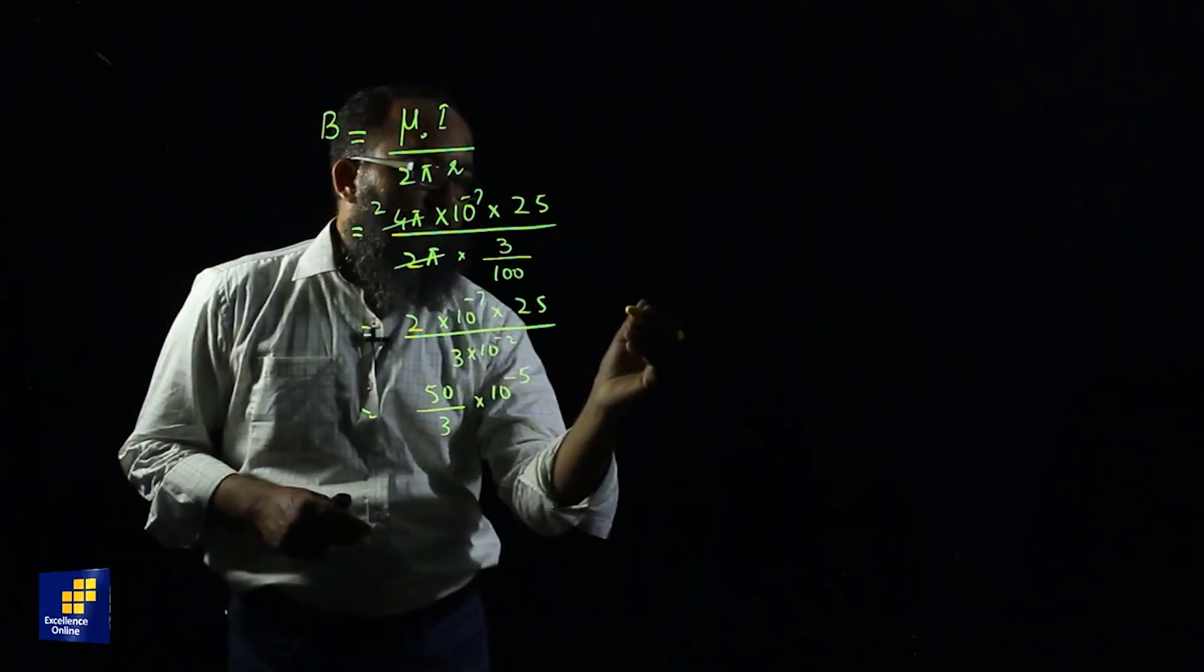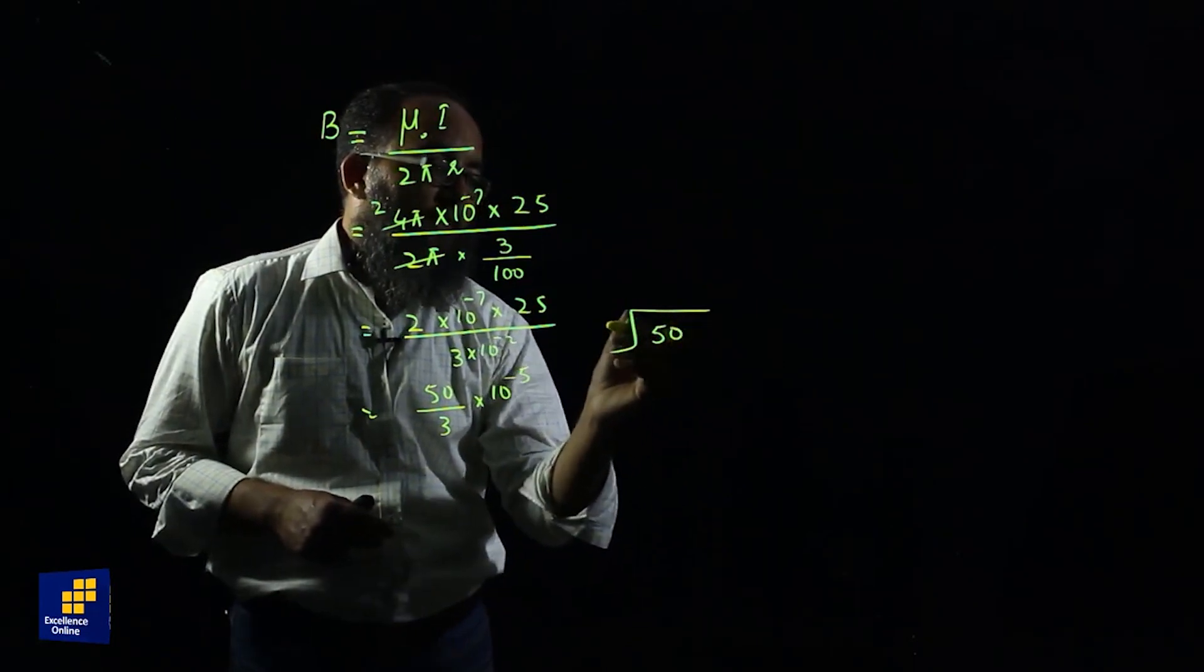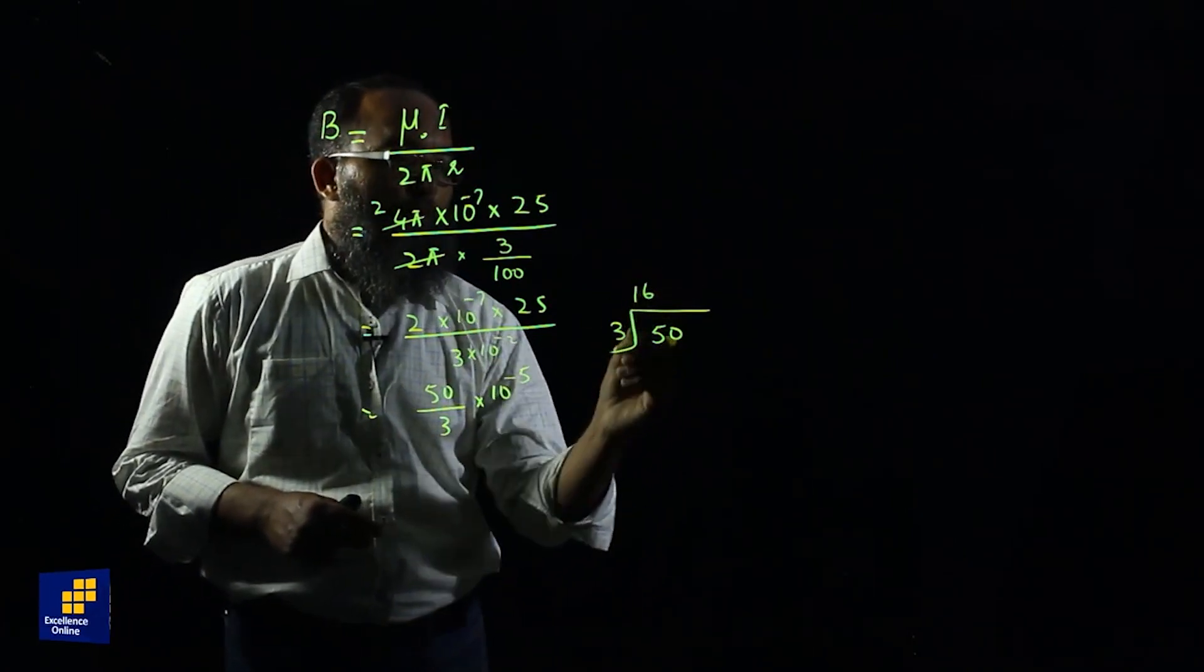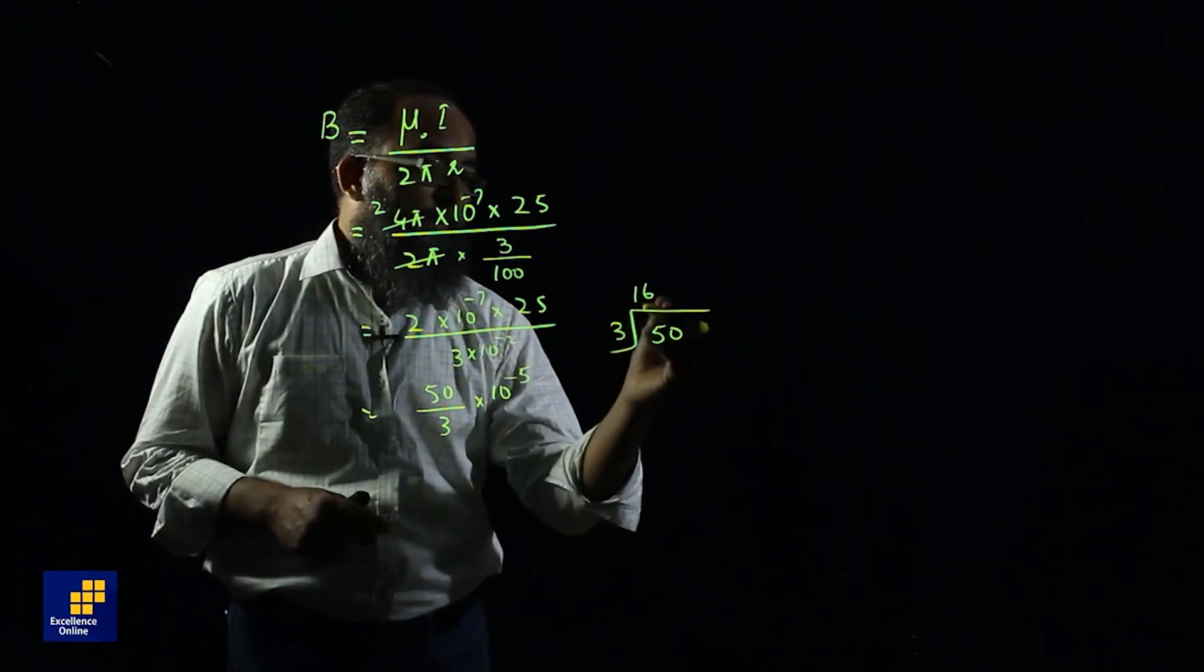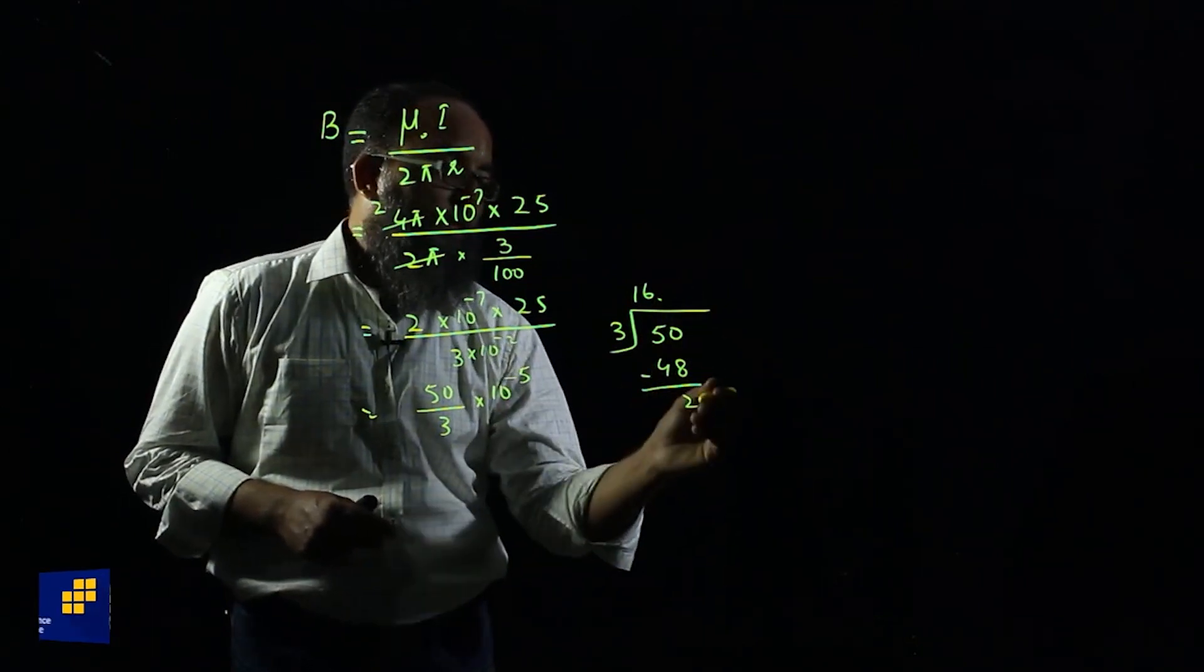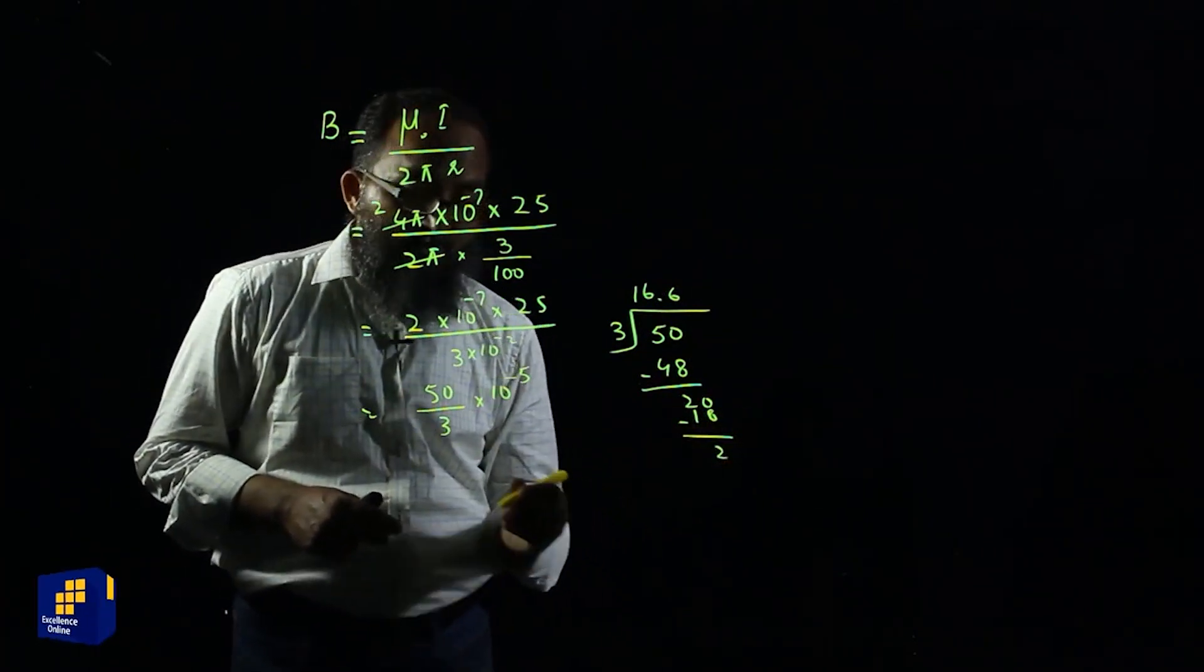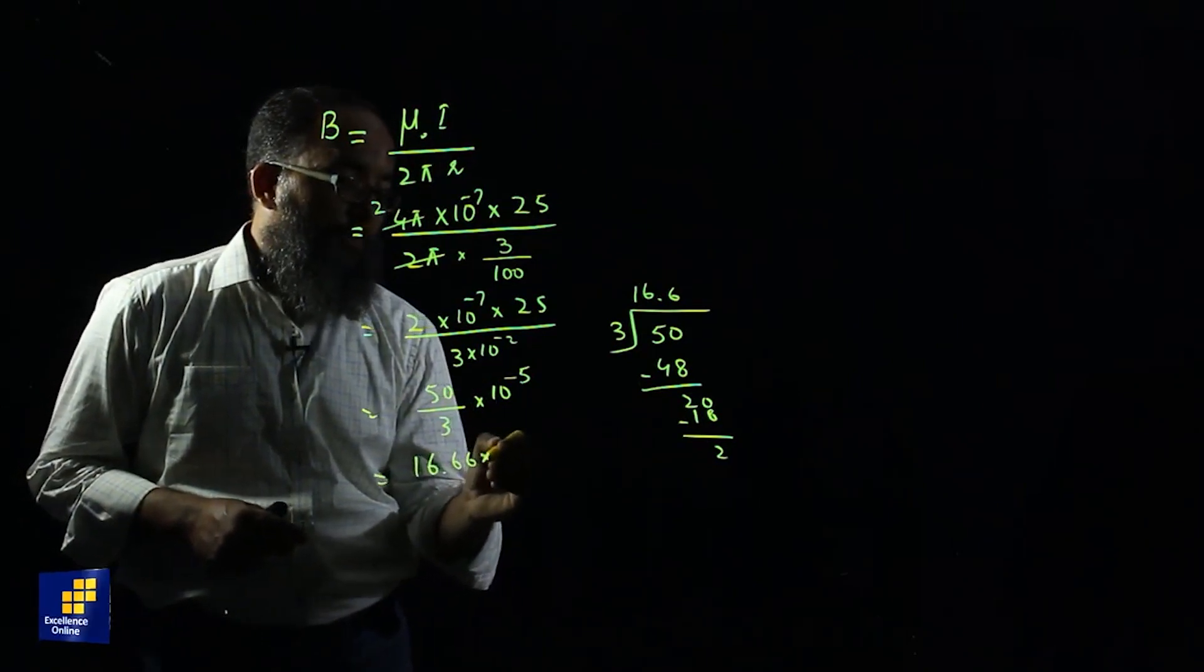If we divide 50 by 3, we can approximate. 3 times 16 is 48. But if you want to find the exact answer, let's divide 50 by 3. 3 times 16 is 48, we get 2. Put a point here. Again, 3 times 6 is 18. The process will continue. It means that we will have an answer like 16.66 exponential minus 5.